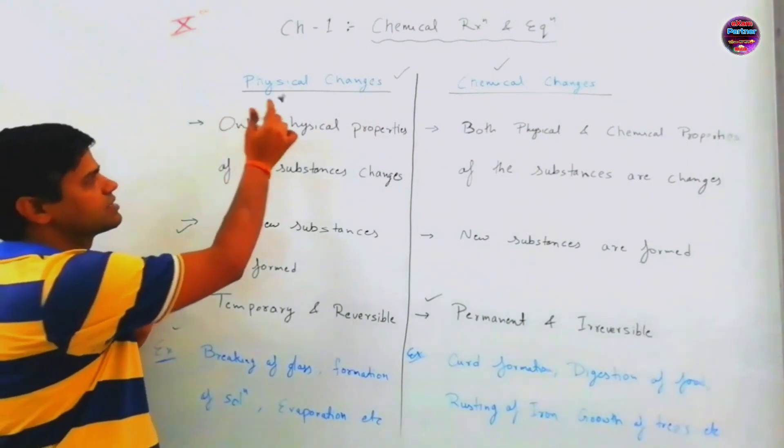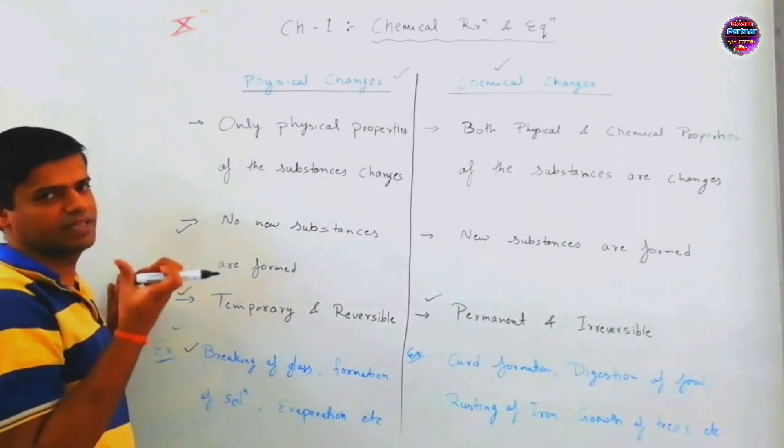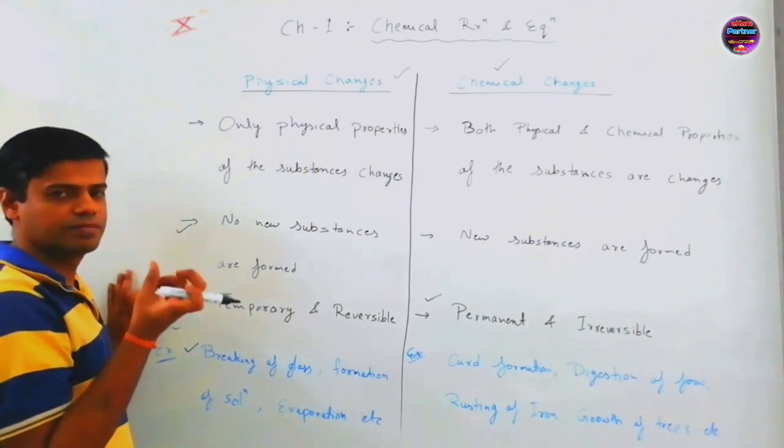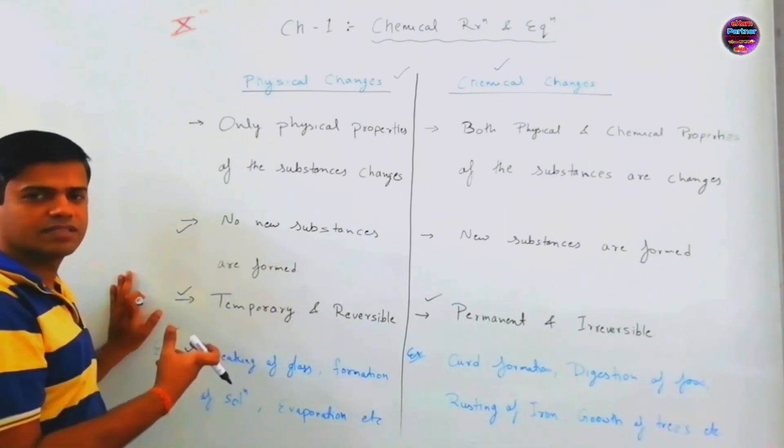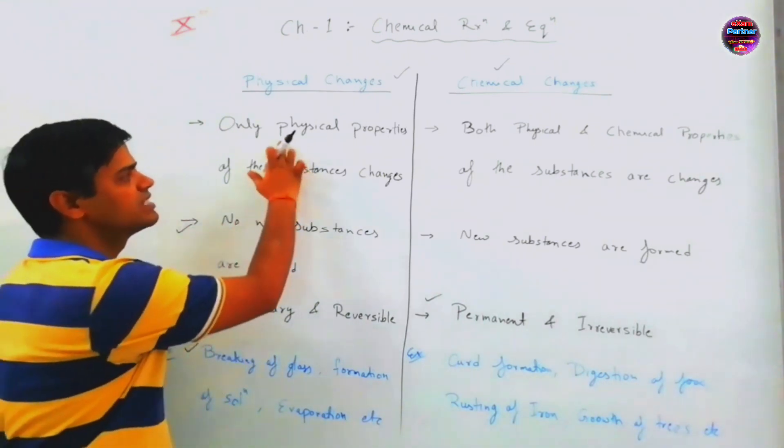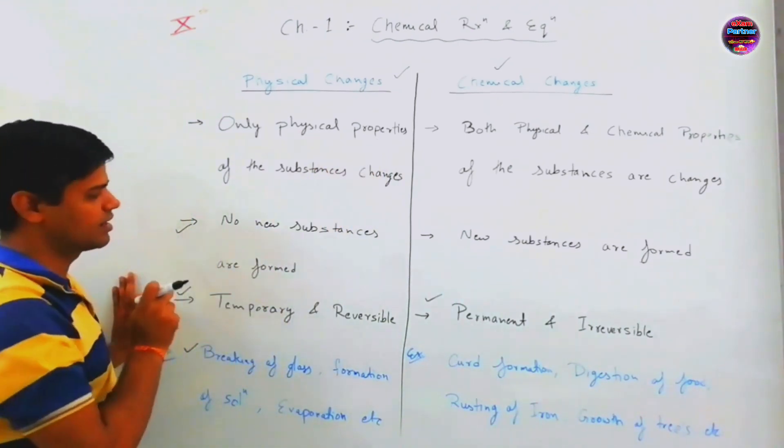Now, we will discuss the next example. Physical changes examples. Breaking of glass. When we break this glass, we can manage the walk up. Classical changes. What is physical changes? Only physical properties are changing. Larger pieces, smaller pieces.